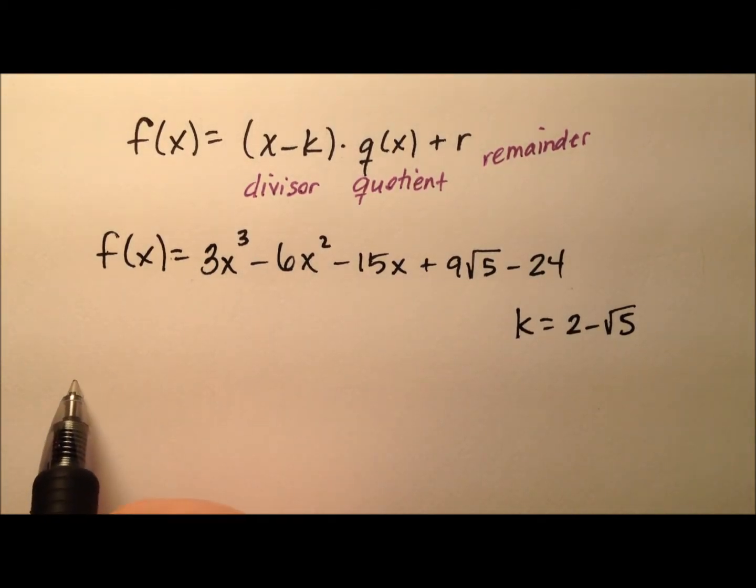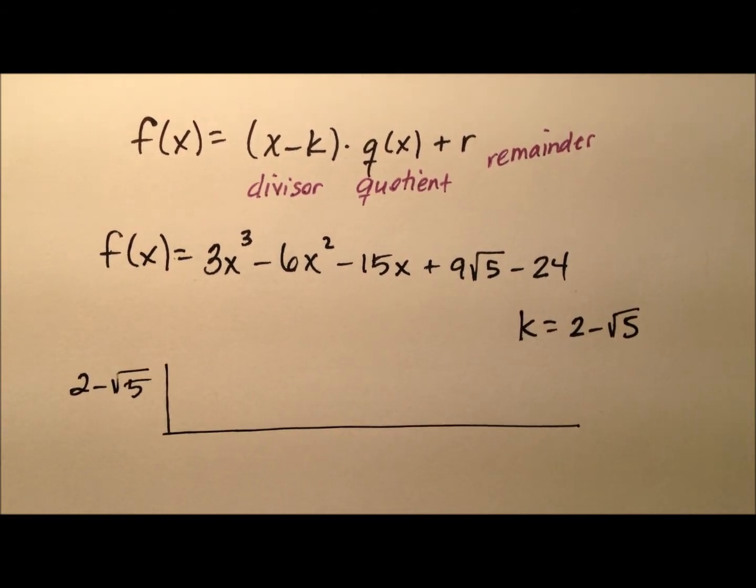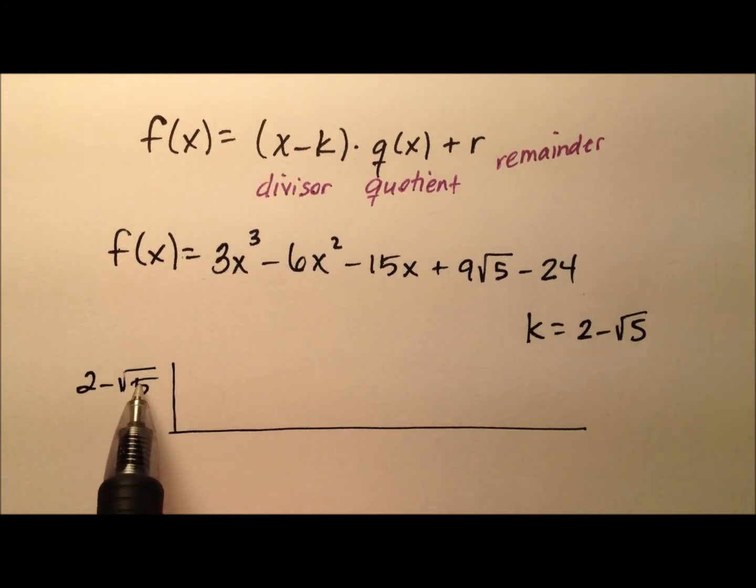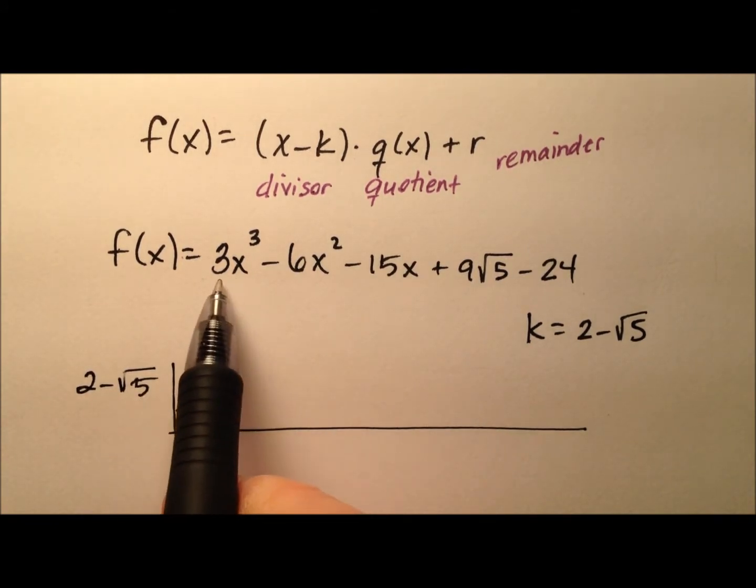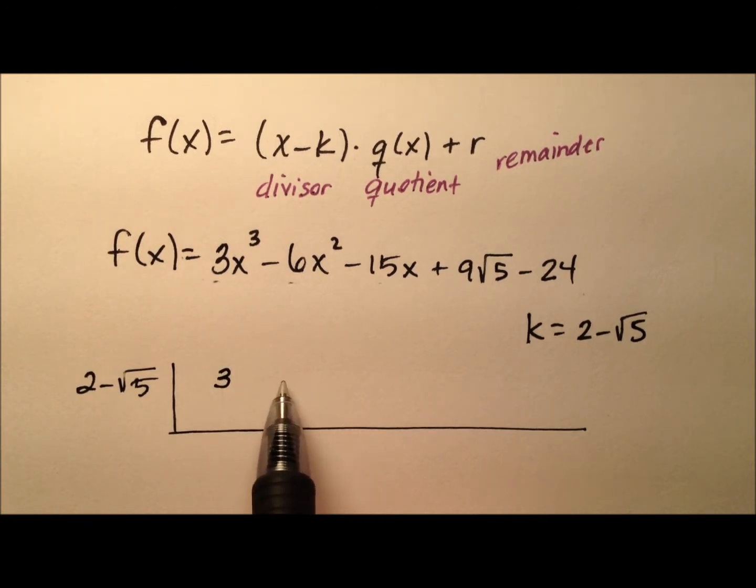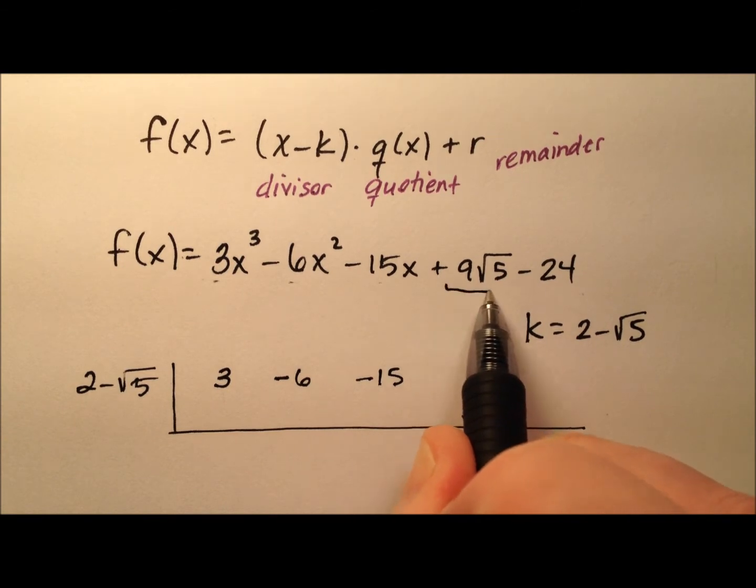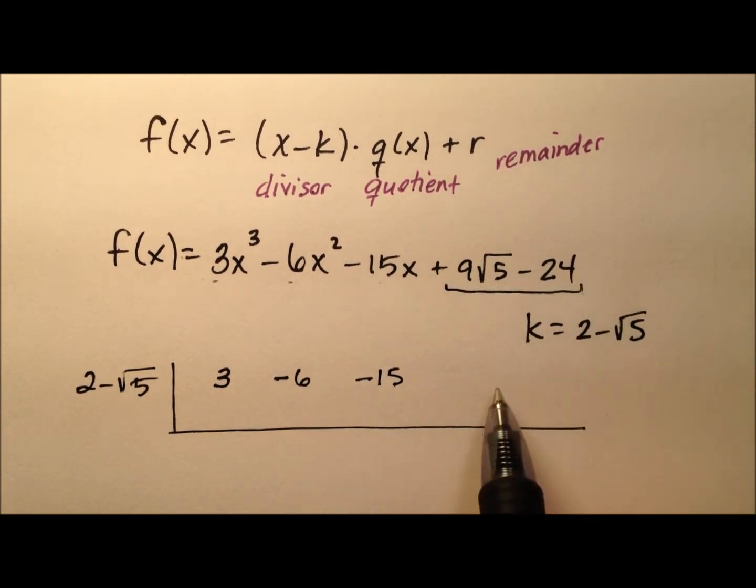Let's put this 2 minus the square root of 5 out front and do our little bars here for our synthetic division algorithm. Remember with synthetic division we're concerned about the coefficients, so I'll put the 3 out front, then we have negative 6, negative 15, and then these values together are the constants, so 9 radical 5 minus 24.